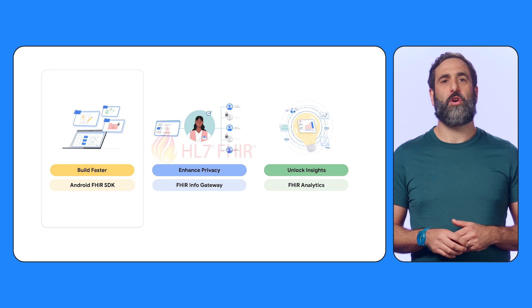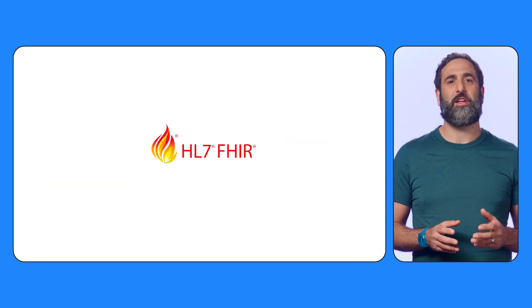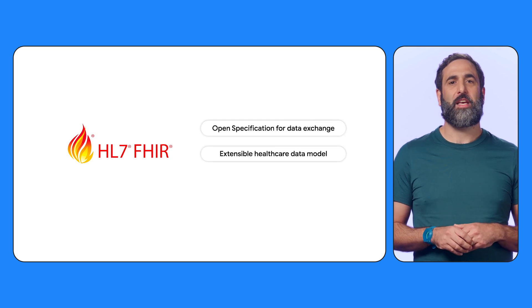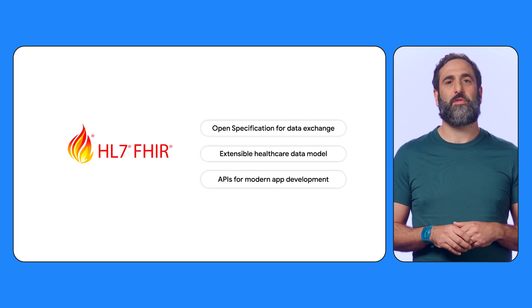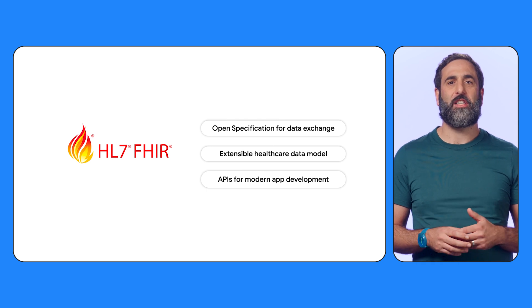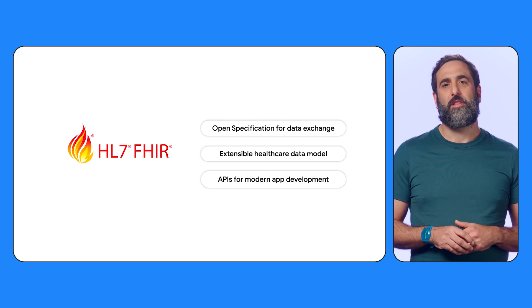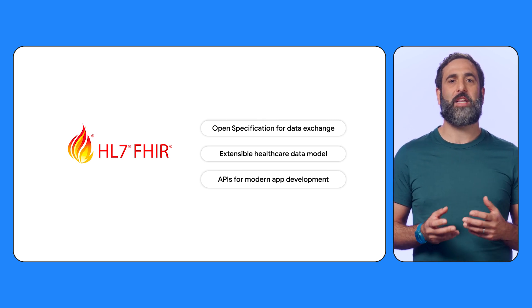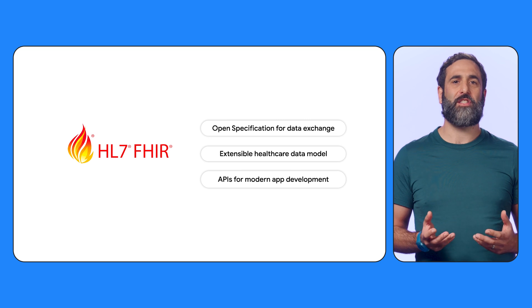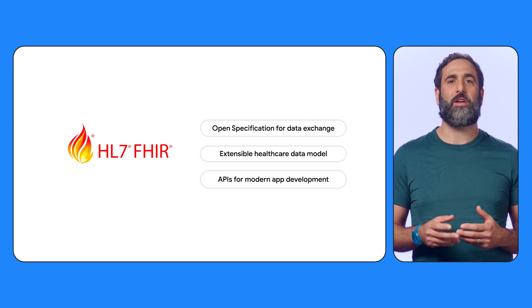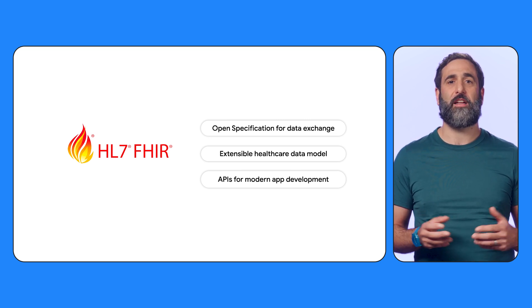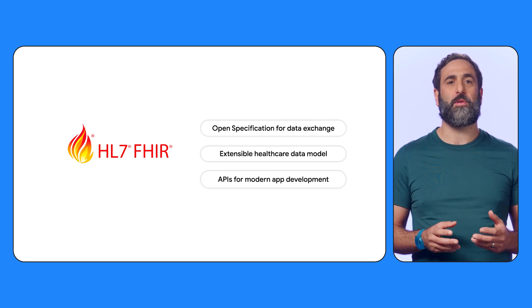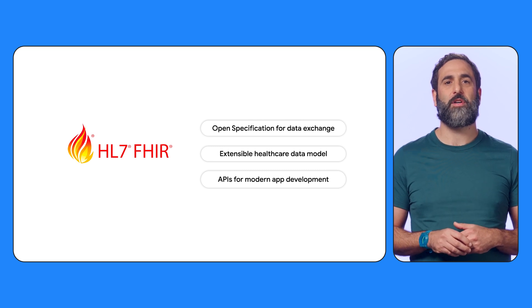Before we start, a quick word about FHIR, which stands for Fast Healthcare Interoperability Resources. FHIR is an open, modern healthcare standard from HL7 designed to improve data sharing and collaboration among different healthcare systems. The FHIR specification defines a set of resources that provides an extensible data model, RESTful APIs and other features that make it a good foundation for building digital health applications for a diverse set of use cases. These standards make it easier to build interoperable digital solutions, which is key to enabling person-centered care.